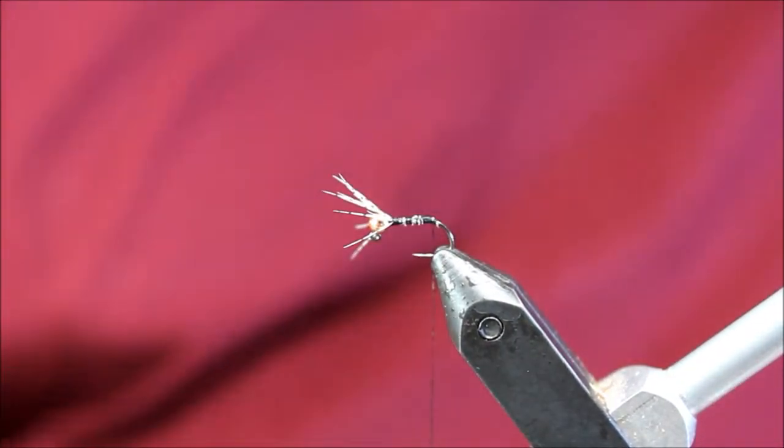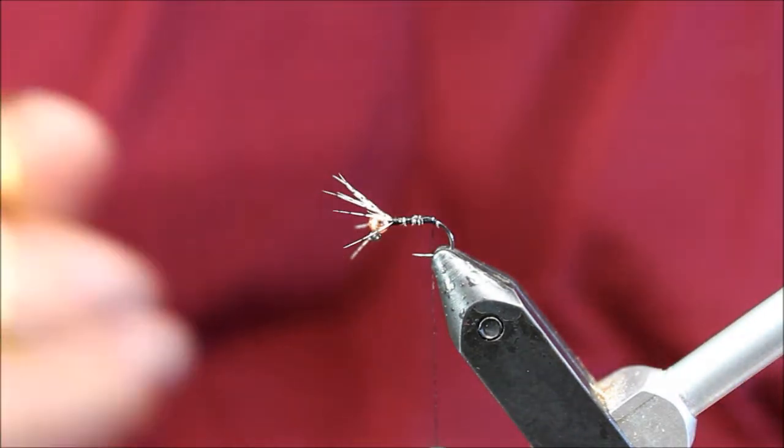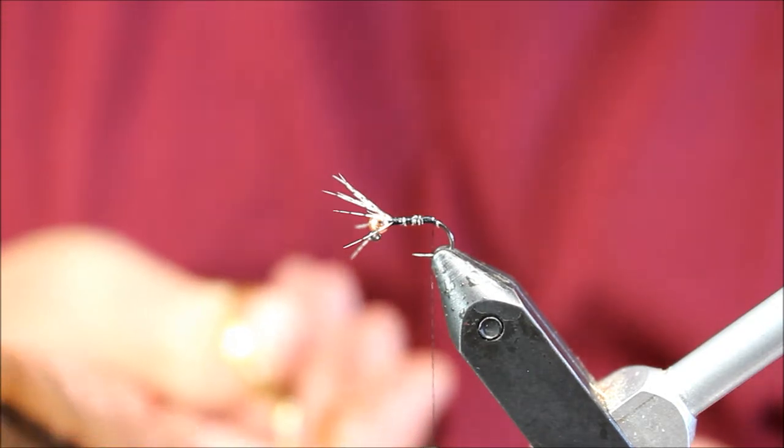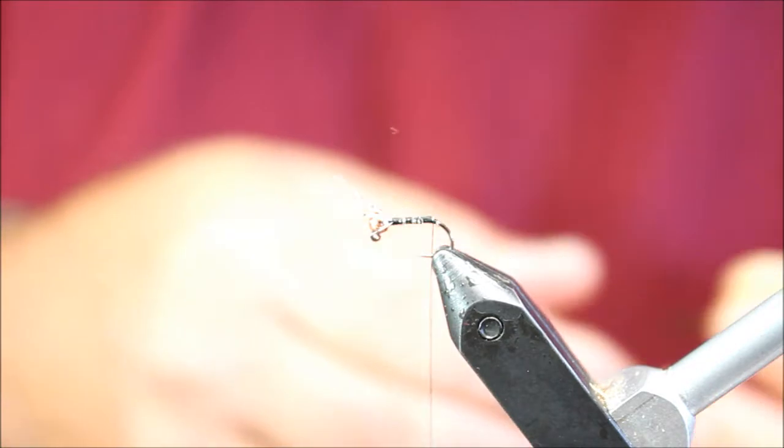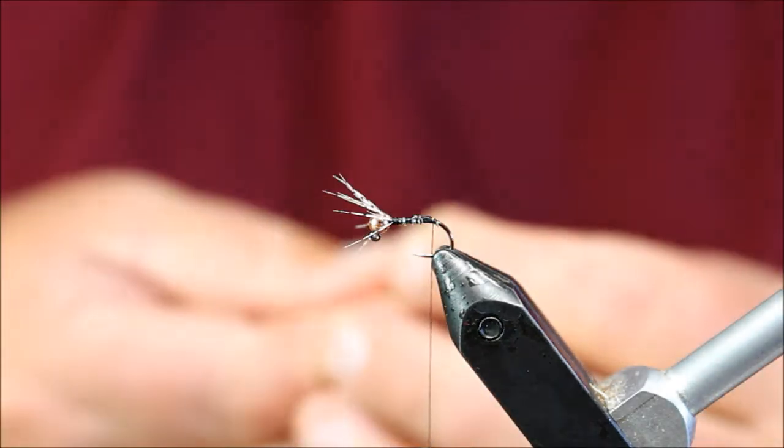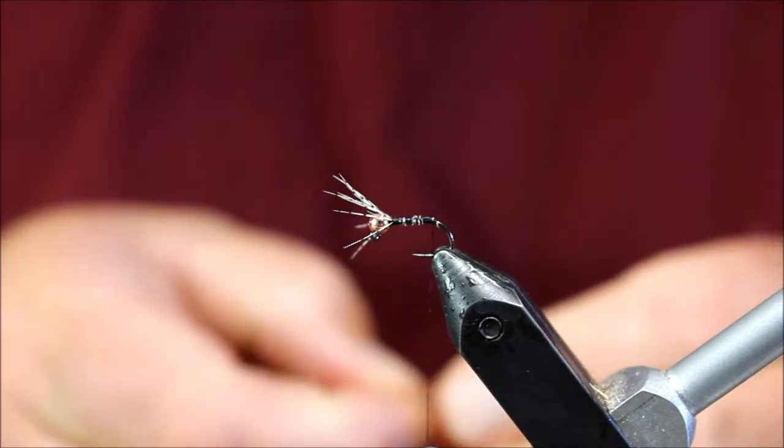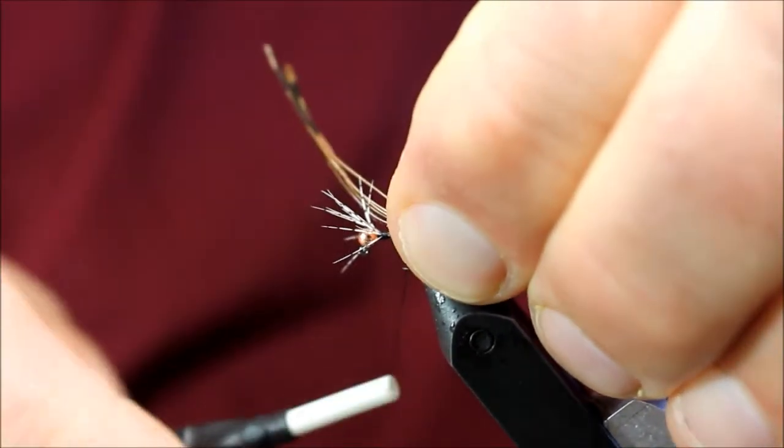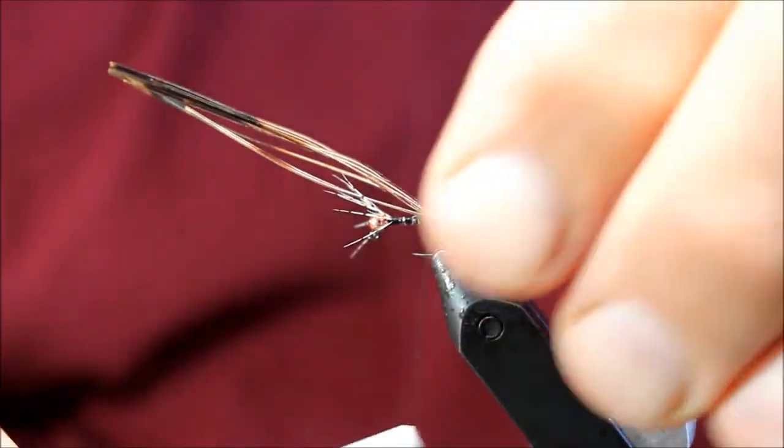At this point I'm going to take a couple, say four or five strands of pheasant tail and I'm going to tie that in on the far side of the hook which will allow that to rotate over and end up on the top of the hook. That tail may be a hair long so I'll just grab and slide up a bit.